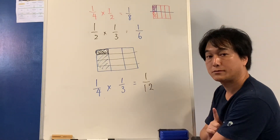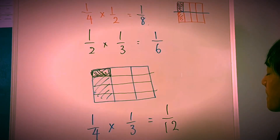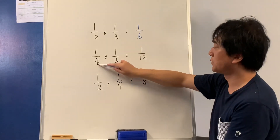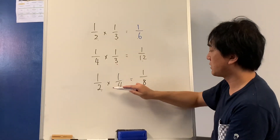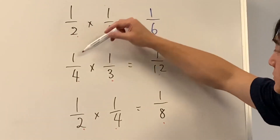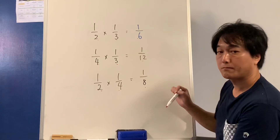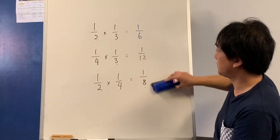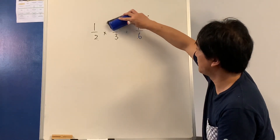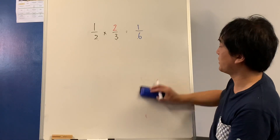Let's pause. So it seems like 2 times 3 is 6, 4 times 3 is 12, 2 times 4 is 8 — and it's the top numbers too. Now let's see what happens if we say half of two-thirds.